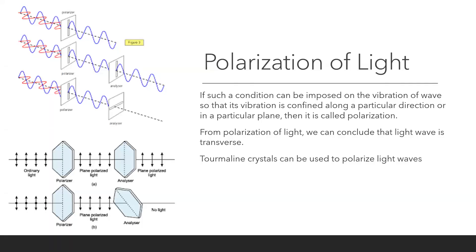Good morning. We will continue the chapter on wave optics, and today we will see another phenomenon of light called polarization. In other phenomena like interference and diffraction, they show that light is a form of wave, but they do not tell us what kind of wave — whether light is a longitudinal wave or a transverse wave. When light shows the phenomenon of polarization, it is evidence that light is a transverse wave.